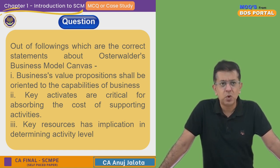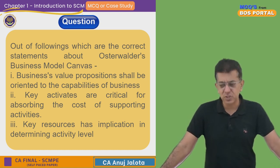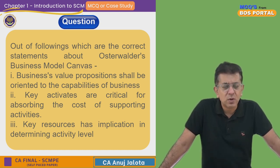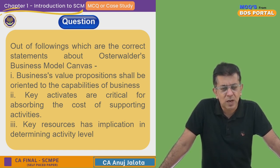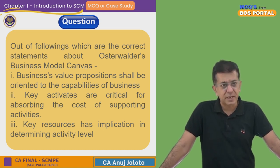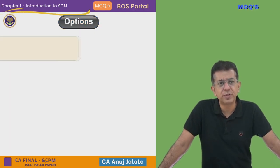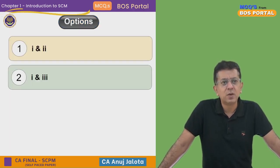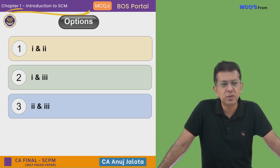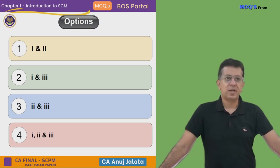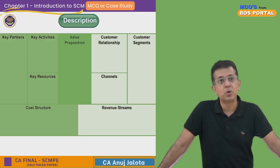Osterwalder's Business Canvas Model is basically a most detailed kind of business model which gives you all things — from where the revenue comes, what the costs are, and so on. To examine these statements and decide whether they are right or wrong, let's look at the four options: one and two are correct; one and three are correct; two and three are correct; or one, two, and three all are correct. Let's go to the business canvas model first.